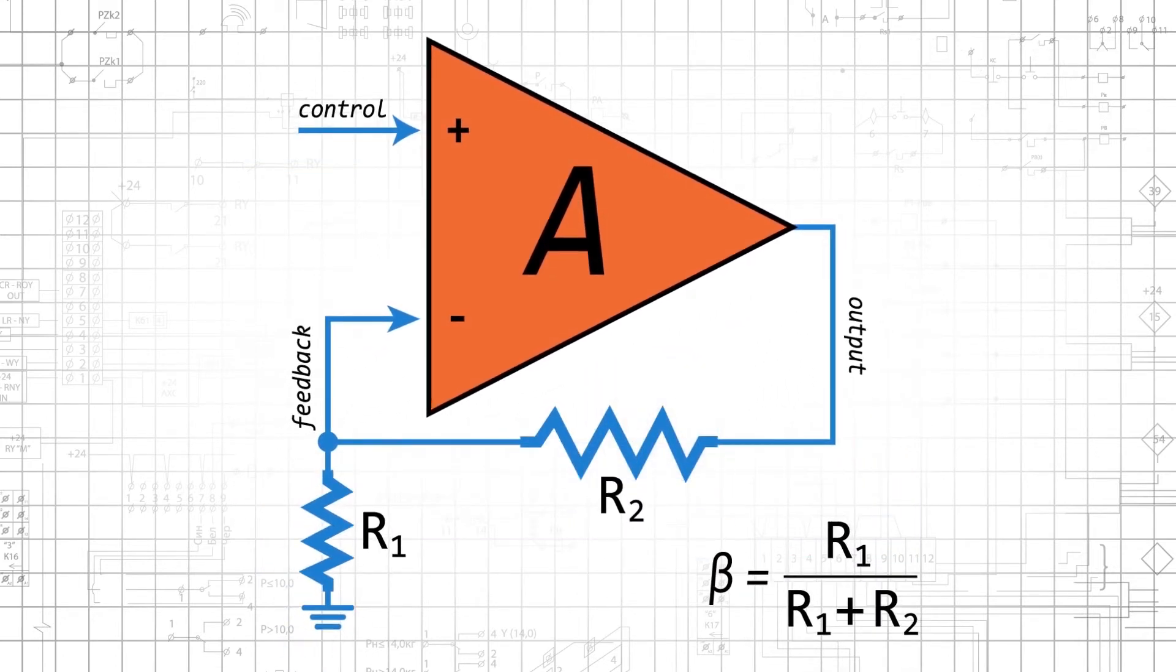Now we just need to address the feedback factor. To do this, we can use a basic resistive voltage divider, where beta equals R1 over the quantity R1 plus R2. For example, if we have R1 equal to R2 equal to 1 kilohm, then beta equals 0.5.